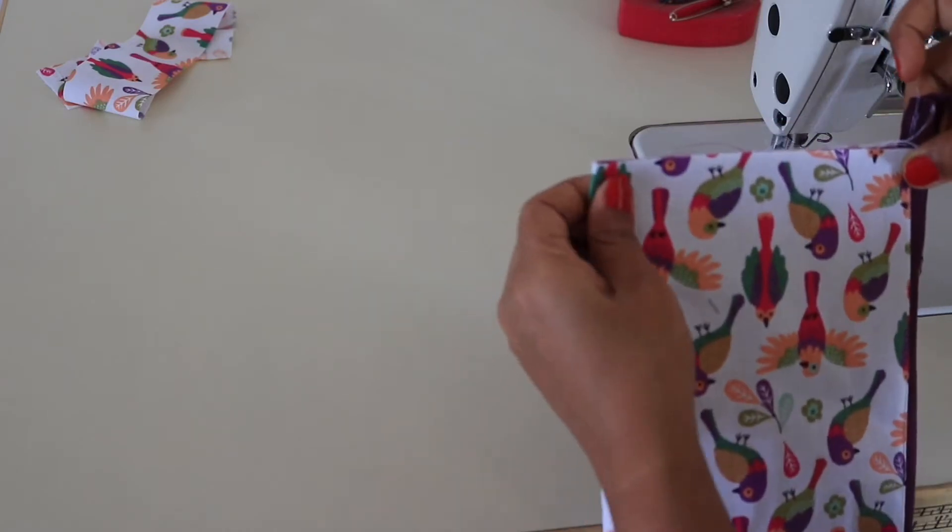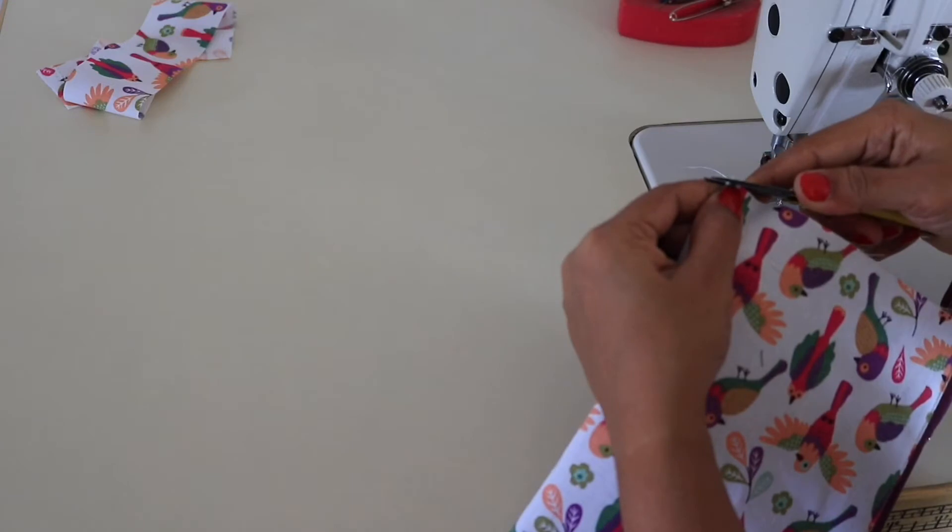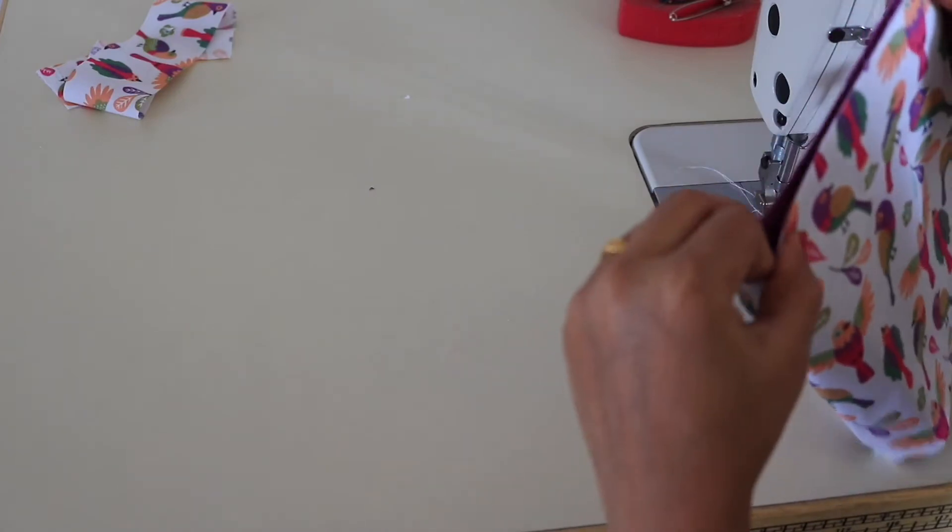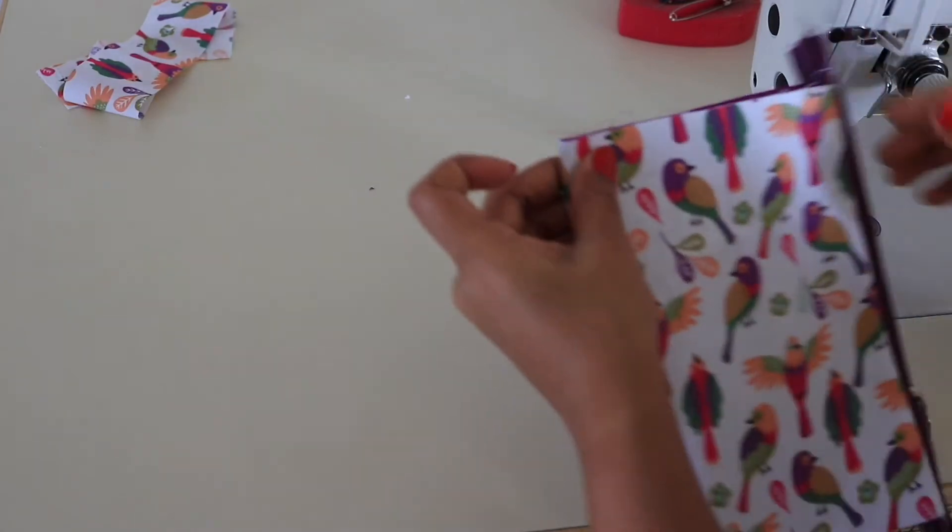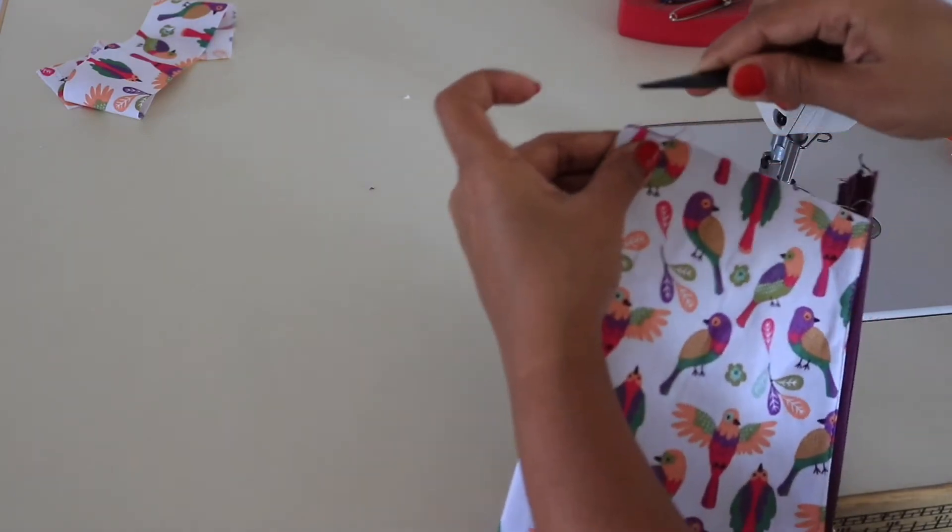Now fold your fabric in half, then make a little cut to get the center point, or you can mark the point also. On the other side also, the upper side, you can pull it out as well.